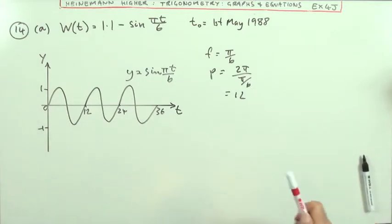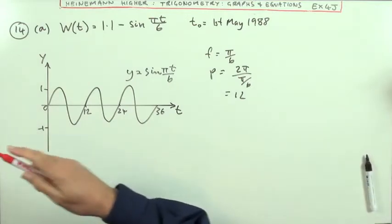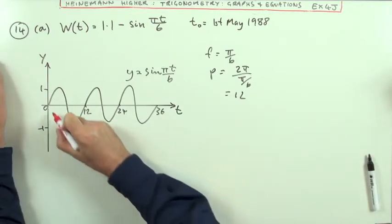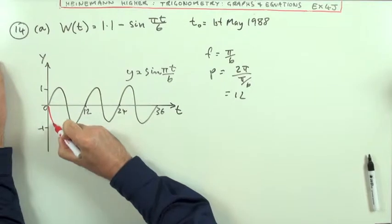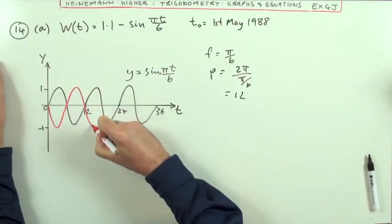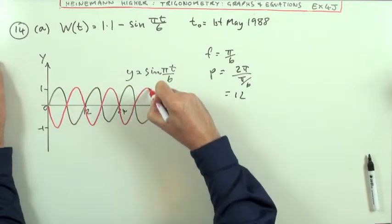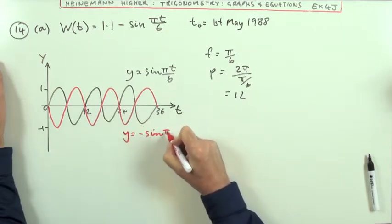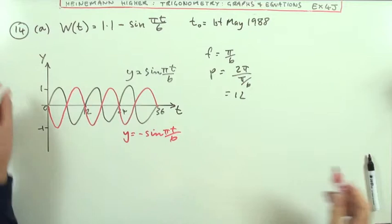Now the next part says, on the same diagram, draw the graph of y is negative. Well, that just means it's upside down. So it's just going to be the reflection of that, going like this. And that part's going to be y equals negative sine pi t upon 6.